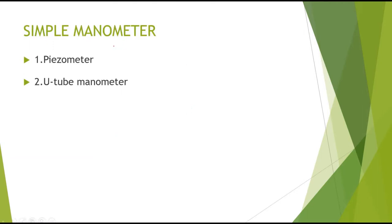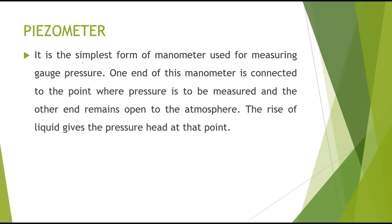Simple manometers are used for finding the pressure of a fluid at a particular point. There are two types: the piezometer and the U-tube manometer. A piezometer is the simplest form of manometer — it consists of a single vertical glass tube. One end is connected to the point where pressure is to be measured, and the other end remains open to the atmosphere.